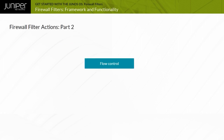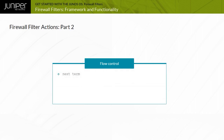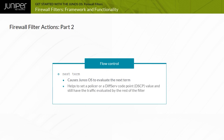Other common firewall filter actions affect the flow of policy evaluation. The Next Term action causes Junos OS to evaluate the next term. It is useful if you want to set a Policer or a DiffServ code point (DSCP) value and still have the traffic evaluated by the rest of the filter. Note that the Next Filter action does not exist for firewall filters.